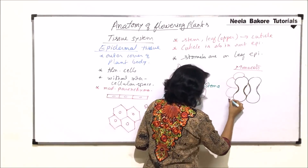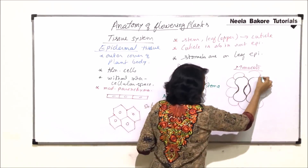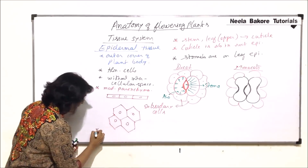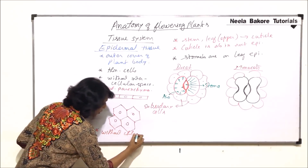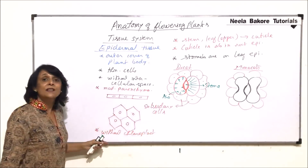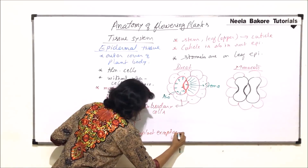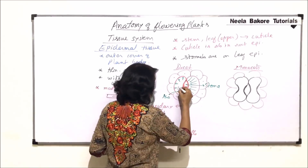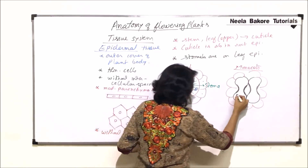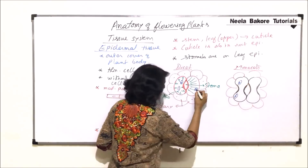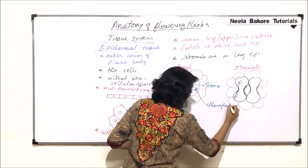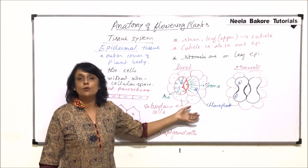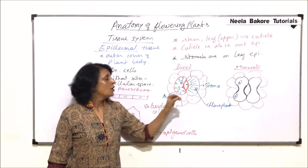In monocot, the subsidiary cells are also present. In case of epidermal cells, we do not find chloroplast — epidermis is without chloroplast except in guard cells. Guard cells have chloroplast, whether in monocot or dicot. These are the only epidermal cells to have chloroplast.